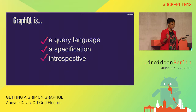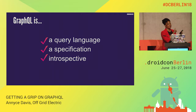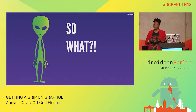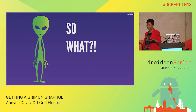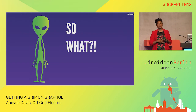So just to recap, GraphQL is a query language, it's a specification, and it's introspective — and these are the core things that make it really powerful. But why would you consider using GraphQL over sticking with REST?